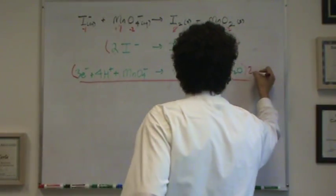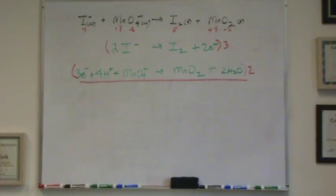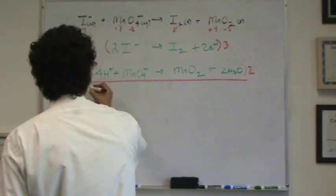I need to multiply the top by three, the bottom by two, to get the electrons to cancel. That'll give six electrons on the right-hand side for the top, six electrons on the left-hand side for the bottom. Those will cancel.